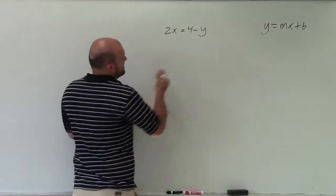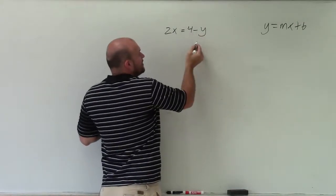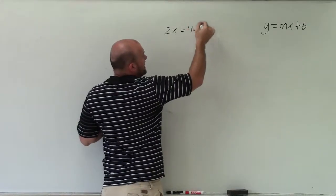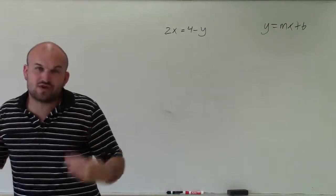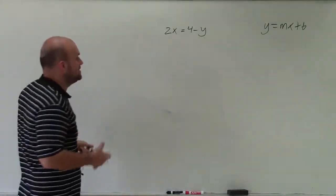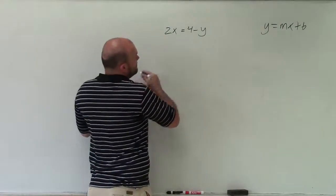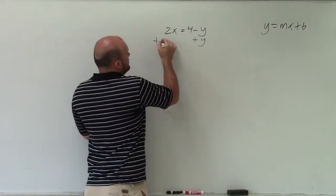So one of the ways we can do it in this case is just get rid of what's happened to the variable. Right here, I have 4 minus y. So really, that's a positive 4 subtracting y from it. So a lot of times, what I like to do is get the y to be positive. So what I'll do is I'll add y to both sides.